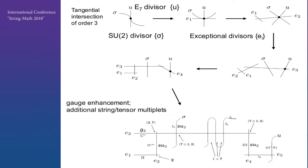We further tune the complex structure of the elliptic fibration, which enlarges the nature of the blow-up sector. As we further tune the elliptic fibration, we start with the E7 and SU(2) divisors intersecting tangentially at order 3. We figured this out because we knew that's the natural way how the matter can appear when we have the E7 divisors intersecting with an additional sector — something charged under E7 — which forced us to tune the complex structure so that such intersections are tangential of order 3. This is not Kodaira type, so we went through a chain of blow-ups that led us finally to a Kodaira-type situation with very rich structure with many additional gauge symmetry factors, additional tensor multiplets, and additional strings.